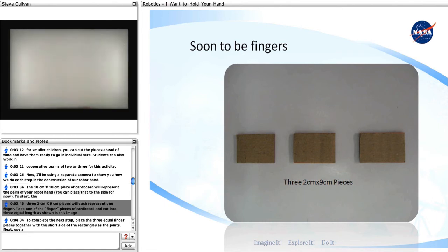To start, the three 2 centimeters by 9 centimeter pieces will each represent one finger. Take one of the finger pieces of cardboard and cut into three equal lengths as shown in this image.